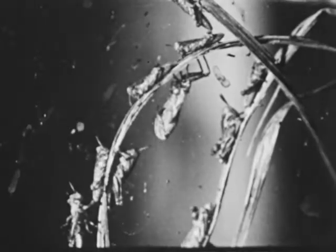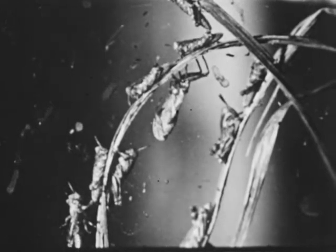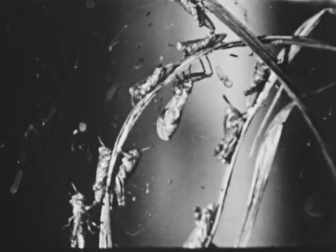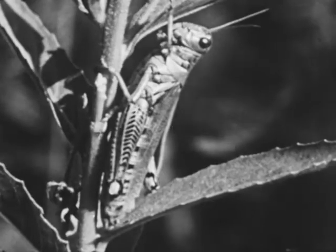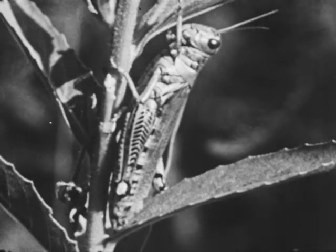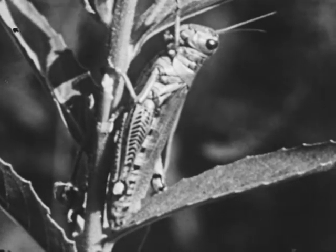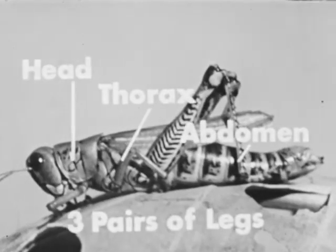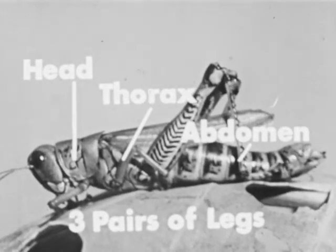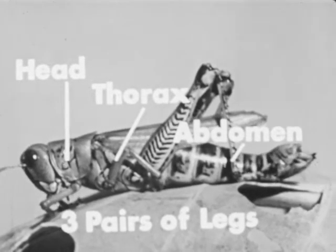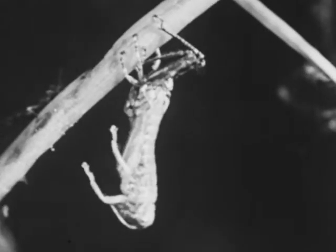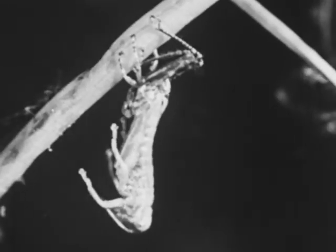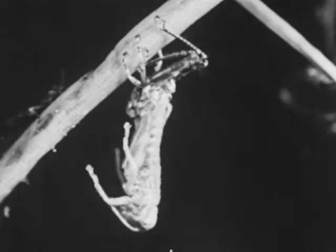Insects that resemble the adult upon hatching and go through several moltings illustrate incomplete metamorphosis. We have seen that the grasshopper is typical in structure of all insects, having a head, thorax, abdomen, and three pairs of legs. We have seen that its life cycle is an example of incomplete metamorphosis.